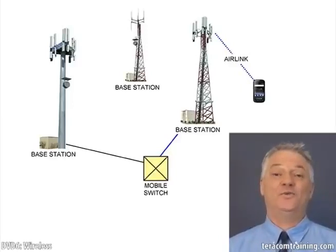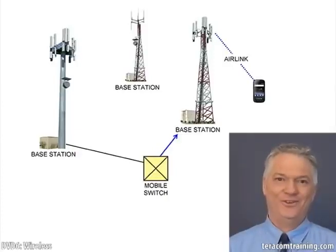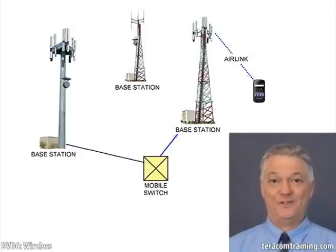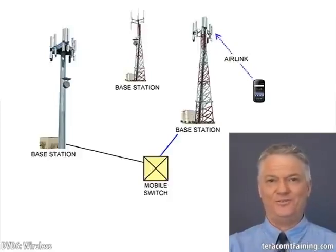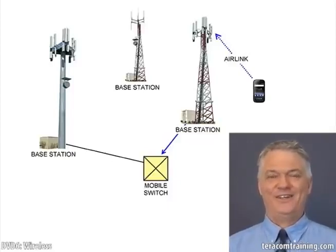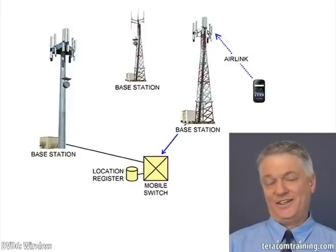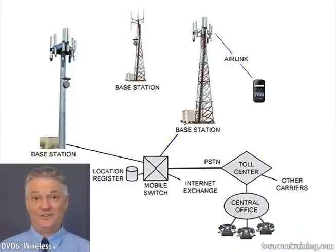The switch also checks whether that customer has paid their bill recently. If all of the above is true, the switch gives an indication to the phone over the air link saying you've got service. As part of this process, the phone informs the switch of the value of the Location Area Identity on the SIM card, and the switch stores that in a table called the location register.